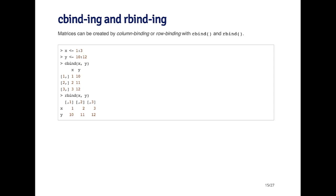For example, suppose I have two objects: x, which is a sequence from one to three, and y, which is a sequence from ten to twelve. If I cbind those two objects, I'll get a matrix where the first column is one to three, and the second column is ten to twelve.